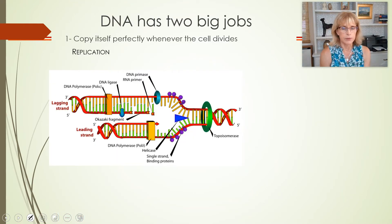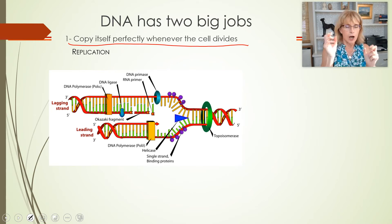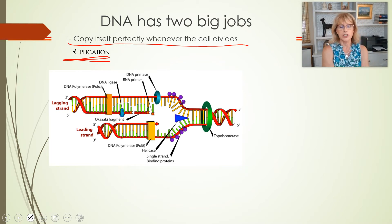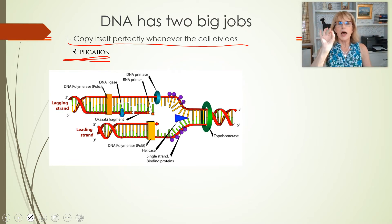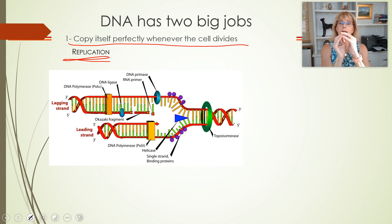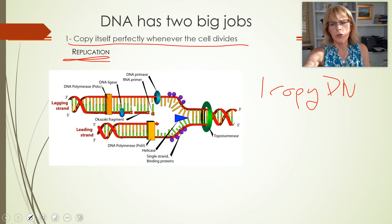DNA has got two really big jobs. The first job DNA has is to copy itself perfectly whenever the cell divides, and that job is called DNA replication. DNA replication has nothing to do with RNA. DNA replication only happens once in the life of any cell. So you will start off with one copy of DNA in a cell, and at the end of DNA replication you will have two copies.